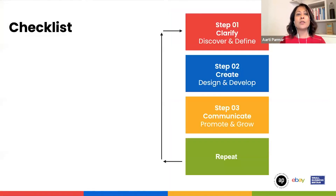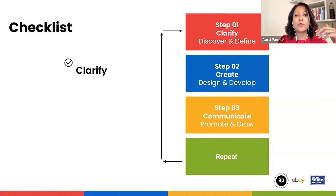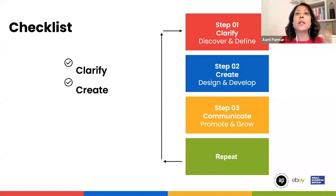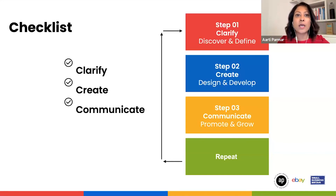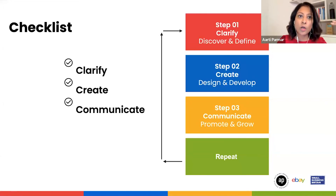Just to wrap up with this little checklist: a lot of business owners try to get straight to promoting and growing — step three — without having step one in place. What I want you to think about from here on is: clarify your brand first, discover and define what it's all about. Then go into the create side — design and develop your visual identity, messaging, products, and services. Then go into the communicate stage, where you can promote and grow and get sales. At any point something's not working, come back to this framework: do I need to clarify, create, or communicate something?